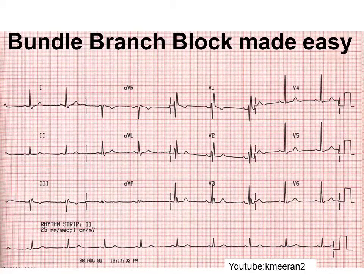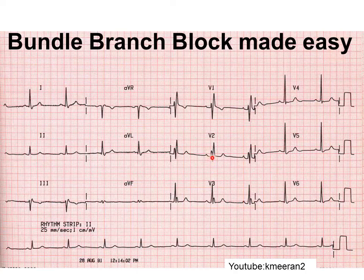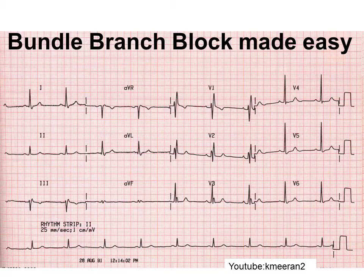Here is an ECG example of right bundle branch block. You can see the M pattern in lead V1 — up, down, up, down — perhaps easier seen in lead V2. And there's a W pattern in V5 and V6 — down, up, down, up. So M going to W spells 'Marrow,' confirming right bundle branch block.